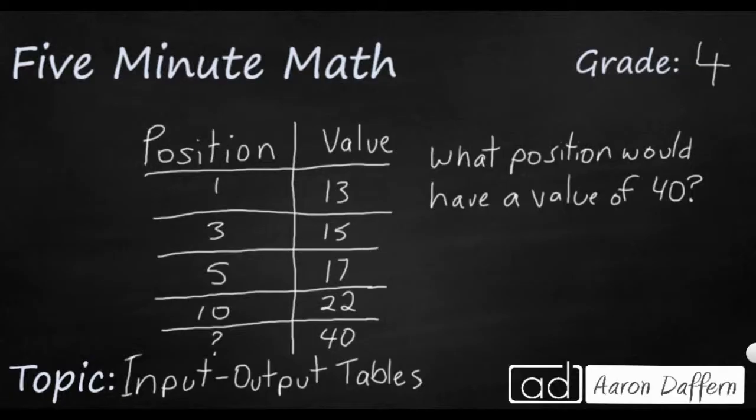So first, we need to figure out what our rule is. How are we getting from our position to our value? So we're position number 1. Something's happening to it, and it's turning into a value of 13. So we have to think, if we're going from 1 to 13, 3 to 15, 5 to 17, 10 to 22.